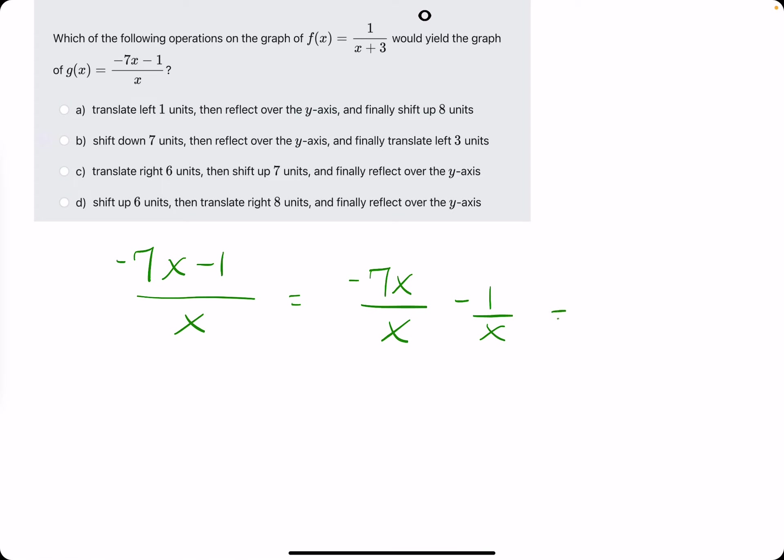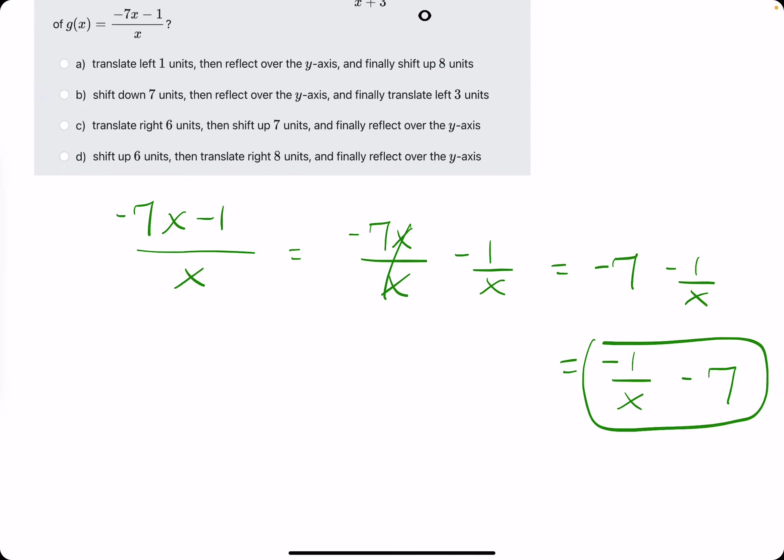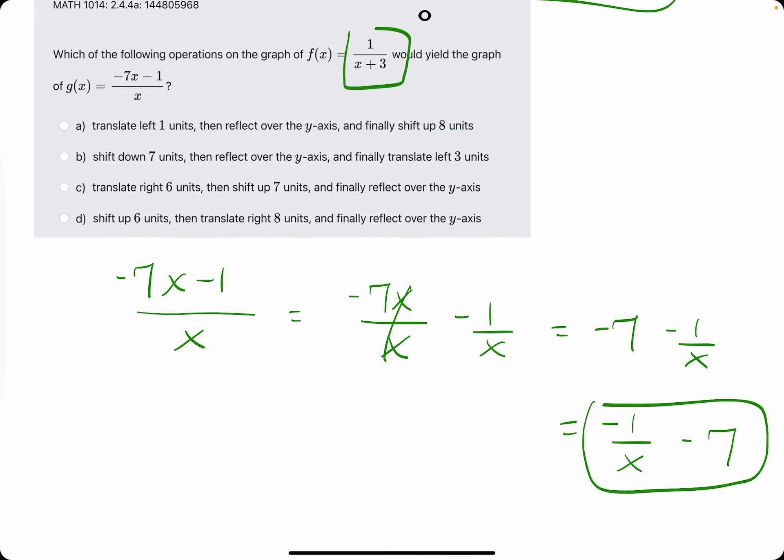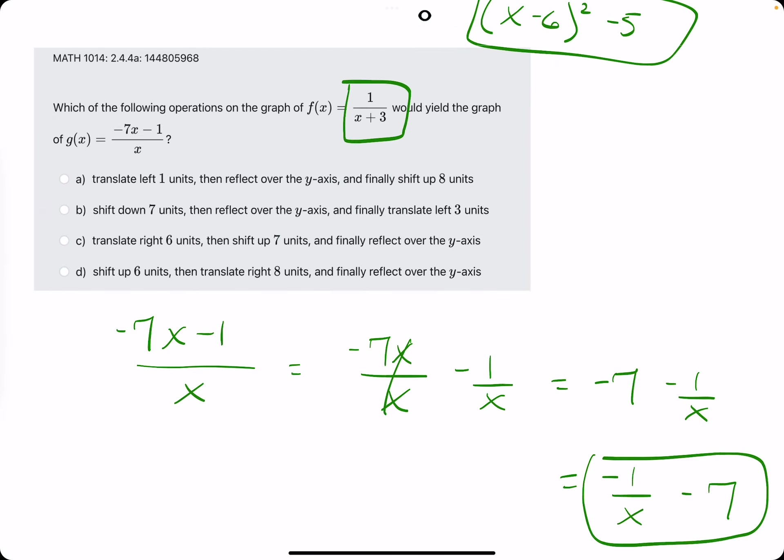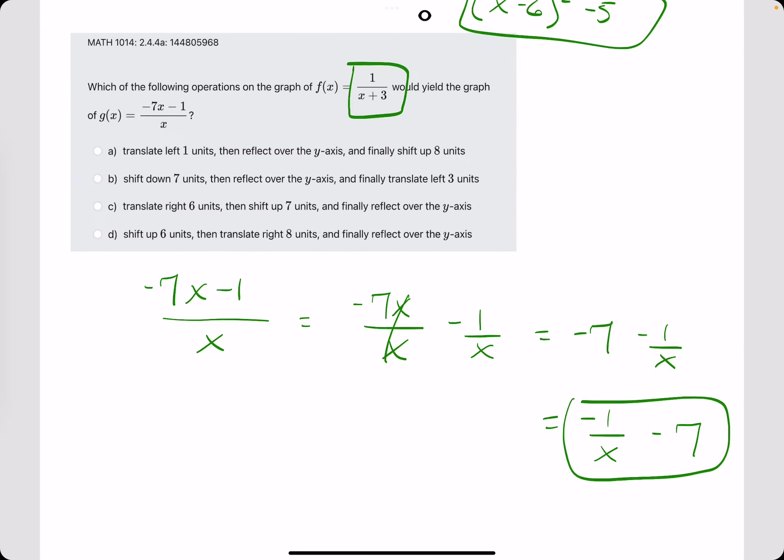Because what I recognize is that you can split this up like so and cancel out the x's there. So what we're left with is a minus 7 minus 1 over x. And then maybe if we flip-flop these we get negative 1 over x minus 7. And we get this. So the purpose of me doing this or rewriting it like so was so that we could maybe try to get a glimpse at the original function in the new function. We could see maybe like how they might have gone from this to this. It's easier to see if it's written like this and not like this.